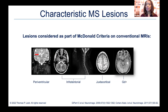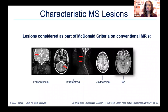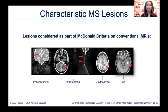We look at the periventricular area — areas near the ventricles of the brain that hold fluid. That's one place that meets the McDonald criteria. Then we look at the lower part of the brain, called the infratentorial, including the spinal cord, to look for areas of damage or lesions. We also look at areas near the cortex, and we look to see if there is ongoing activity. When gadolinium or IV dye is given during your scan, it shows whether inflammation is occurring at that time, indicating how active or recent a lesion is.